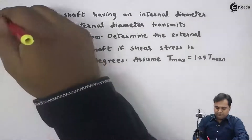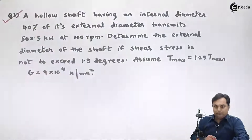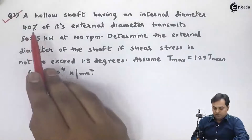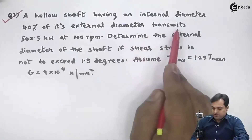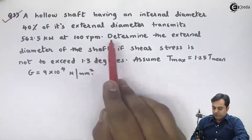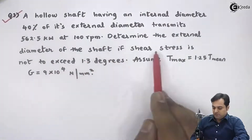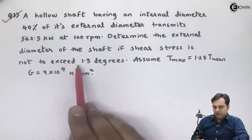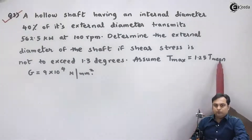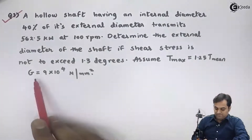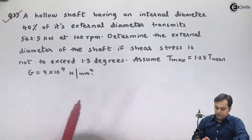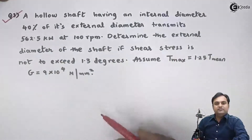Let's take question number three. A hollow shaft having an internal diameter 40 percent of its external diameter transmits 562.5 kilowatts at 100 rpm. Determine the external diameter of the shaft if shear stress is not to exceed 1.3 degrees. Assume T_max is equal to 1.25 times T_mean. Capital G is 9 × 10^4 newton per mm². I will write this in the form of data.